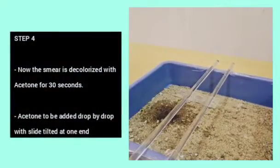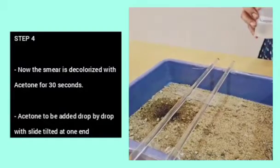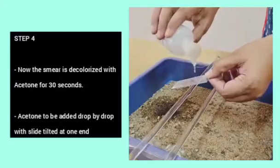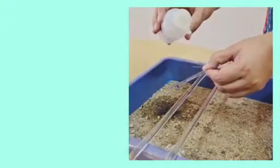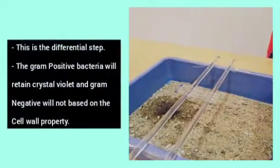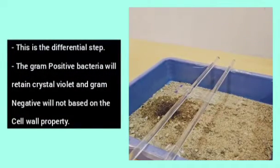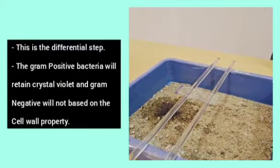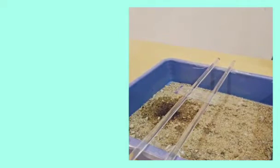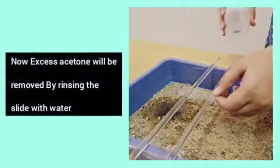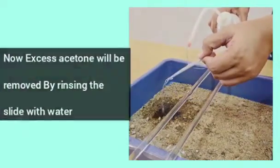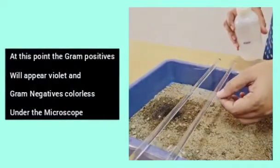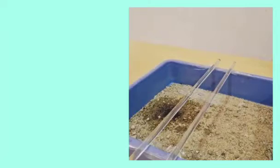Step 4. Now, the smear is decolorized with acetone for 30 seconds. Acetone to be added drop by drop with slide tilted at one end. This is the differential step. The gram positive bacteria will retain the crystal violet and gram negative will not based on the cell wall property. Now, excess acetone will be removed by rinsing the slide with water. At this point, the gram positives will appear violet and gram negatives colorless under the microscope.